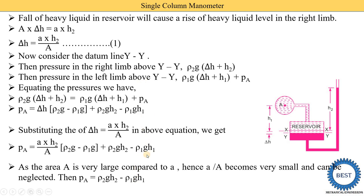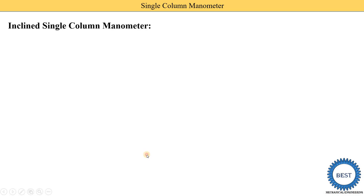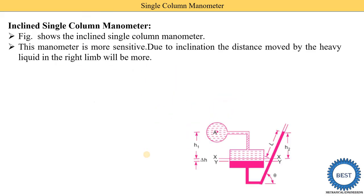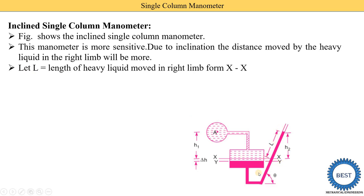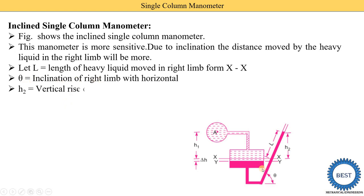This is the final equation for the vertical single column manometer. Now we study the inclined single column manometer. This manometer is more sensitive; due to the inclination, the distance moved by the heavy liquid in the right limb is more. The right limb is inclined at a certain angle theta. An additional term L is introduced: L is the length of heavy liquid moved in the right limb from X-X.